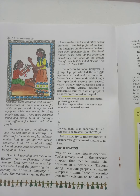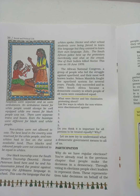Next is participation. Why do we have regular elections? You have already read that the people make decisions in a democracy through voting. People elect leaders to represent them, and these representatives take decisions on behalf of the people. It is assumed they will keep in mind the voice and interest of the people. So how do people participate in a democracy? The first way is through elections — in an election, people choose their government, and that government takes care of the interest of the people.